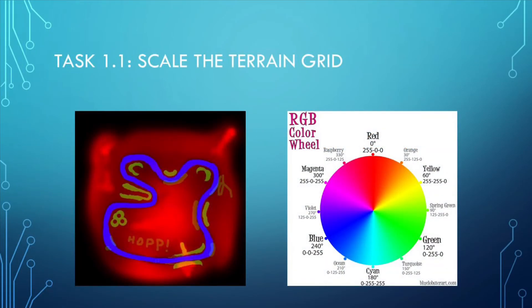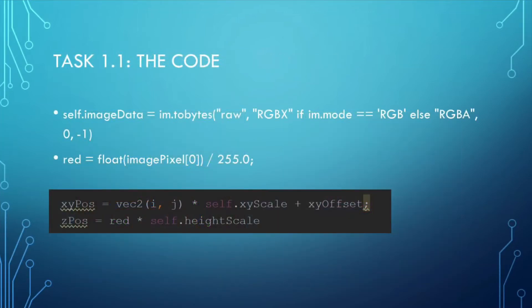In this project, the height of the terrain at every point is determined by the value of the red channel of the image track01.png. This information is read into self.imageData by self.imageData equals im.tobytes, where im is the file name of the image passed into the load function. The red channel information is then passed onto imagePixel.